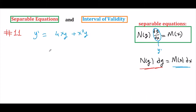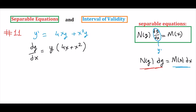Question number 11. y prime equals 4xy plus x squared y. Our first step is again to convert y prime into dy/dx. We observe we can factor out y, leaving (4x plus x squared) inside. Now we cross multiply and simultaneously divide by y, obtaining 1/y dy equals (4x plus x squared) dx.